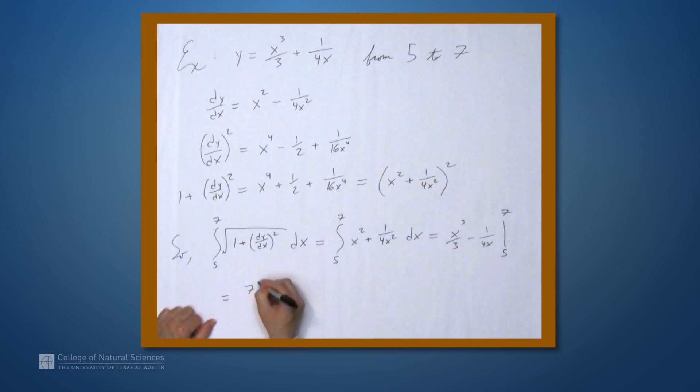So, we get 7 cubed over 3 minus 1 over 28 minus, and now in parentheses, 5 cubed over 3 minus 1 over 20. And this is our arc length.